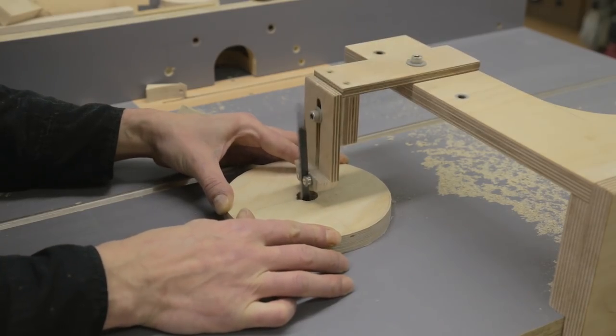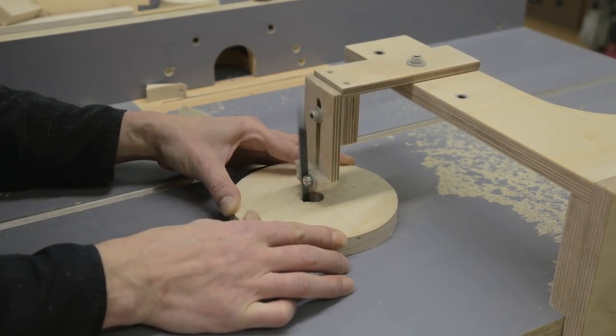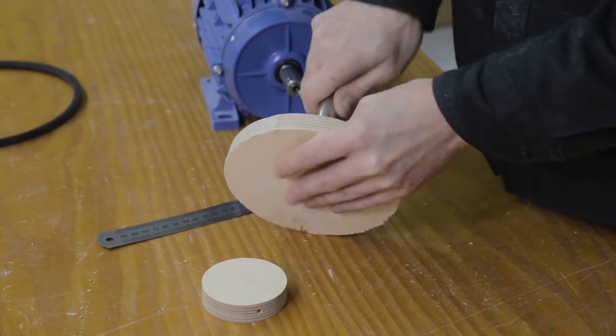I make a rebate for the part of the motor shaft that sticks out. And now I glue the two parts together like this.